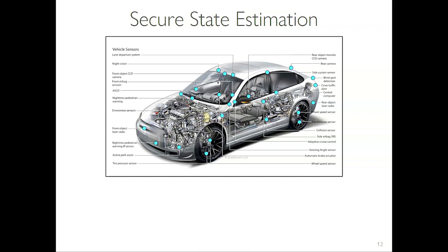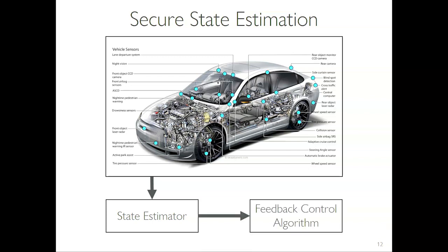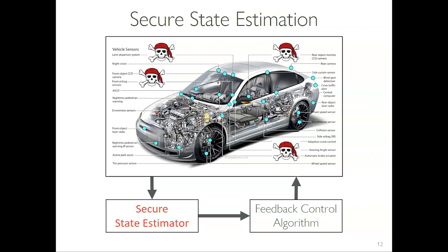Consider a system like a car with multiple sensors. The typical scenario: you collect all sensor information, estimate the state of your car, and give it to a feedback control algorithm. Now assume some sensors are malicious — we don't know which ones, but we know some are compromised. We would like to fuse all the information together using what's called a secure state estimator that can estimate the system state regardless of the existence of an attack, then feed it back to the control algorithm.